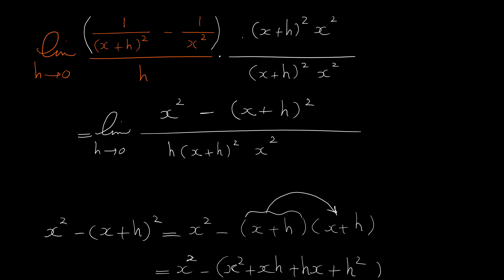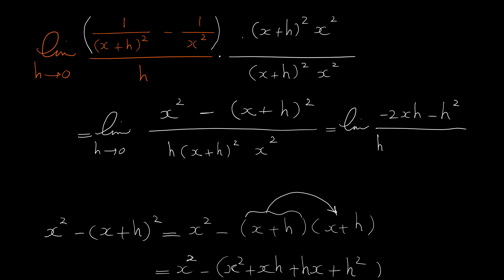Back to our question: the limit is (−2xh − h²) over h(x + h)² x². Between negative 2xh and negative h² there is a common factor of h. Factoring out h gives h times (−2x − h). The h from the top cancels with the h from the bottom.